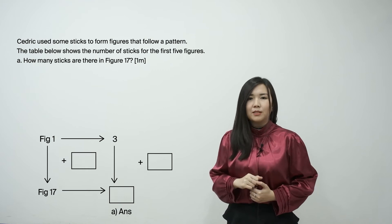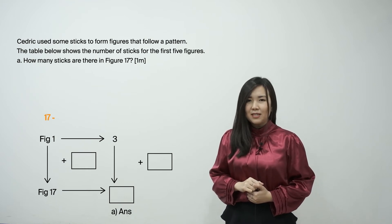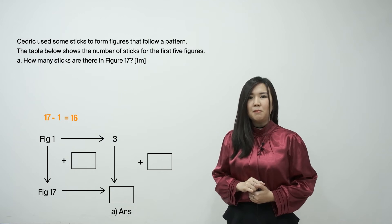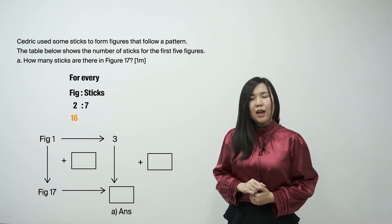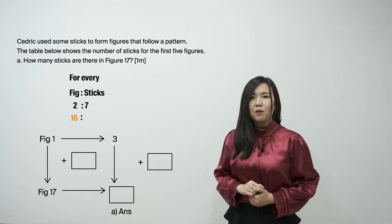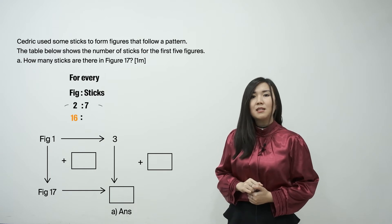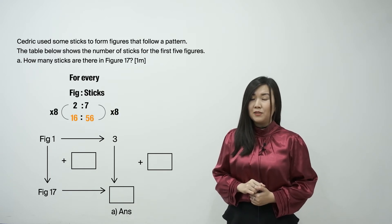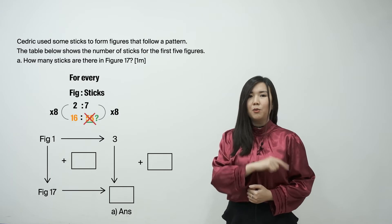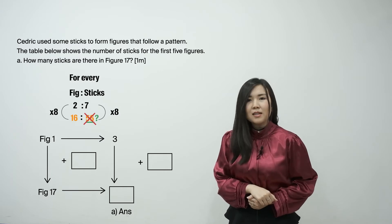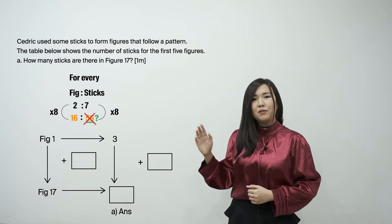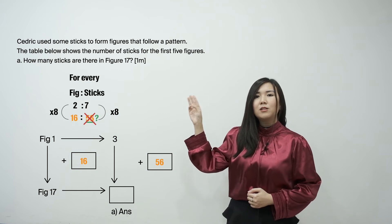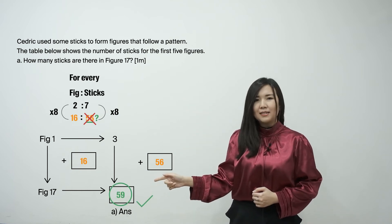How many more figures to figure 17? 17 minus 1 equals 16, so we need 16 more figures. For every 16 more figures, we will get 56 more sticks. Is the final answer 56 sticks? No! So with the box and arrow technique, we will remember to add 56 more sticks to the 3 sticks in figure 1, to get 59 sticks for part A.